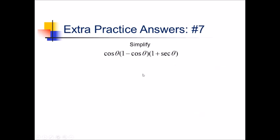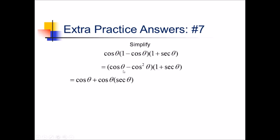To simplify this problem, there are no Pythagorean identities we can quickly apply, and algebraically all we can really do is multiply all this stuff together. I'm going to start by distributing cosine of theta to the first parentheses, giving cosine minus cosine squared. Next, I'll foil this whole thing out: first, cosine times 1 is cosine of theta; then cosine of theta times secant of theta; then negative cosine squared minus cosine squared secant of theta.